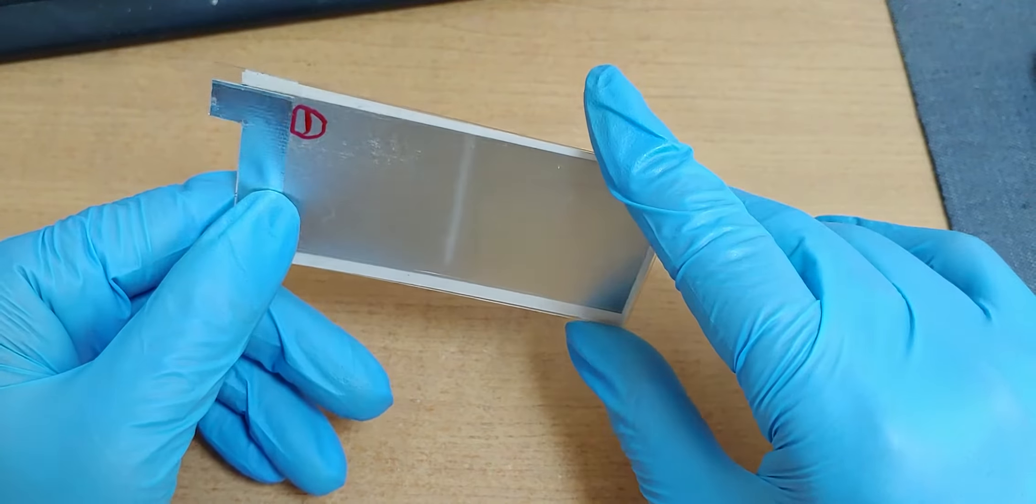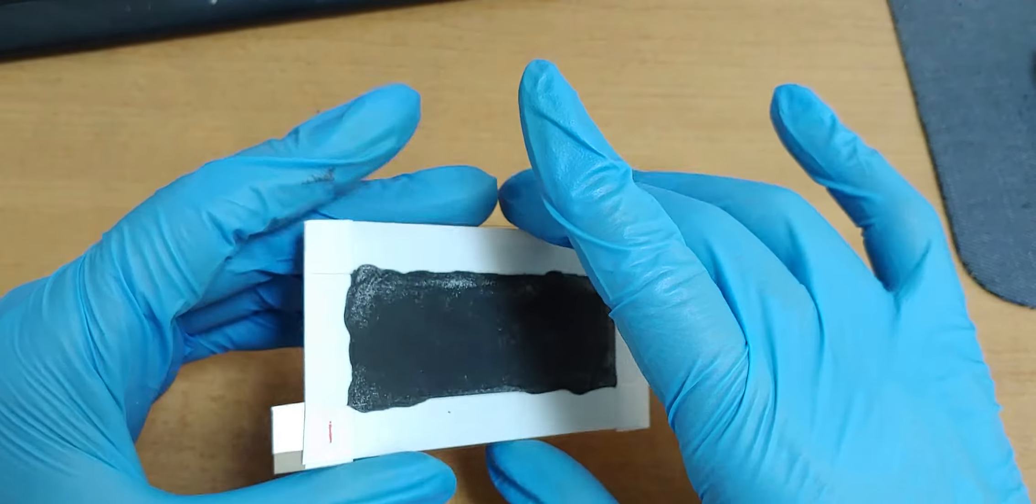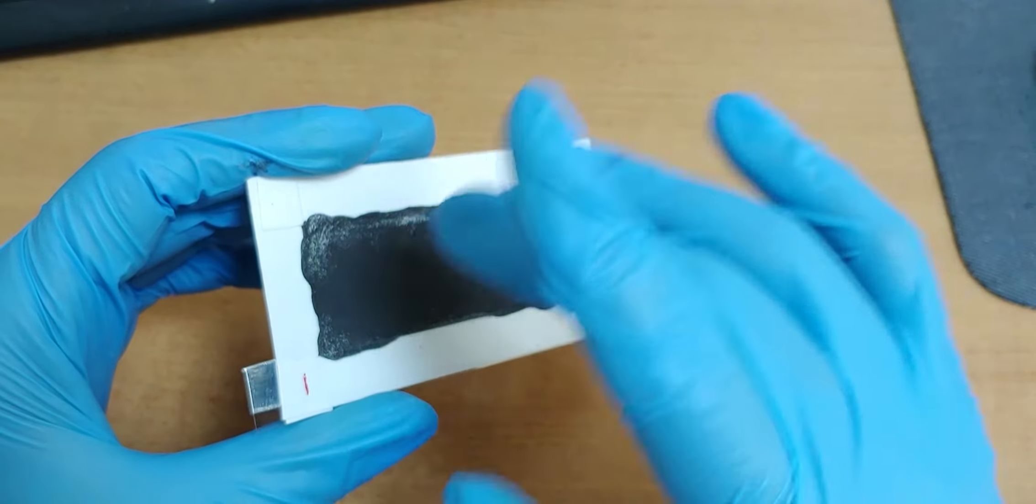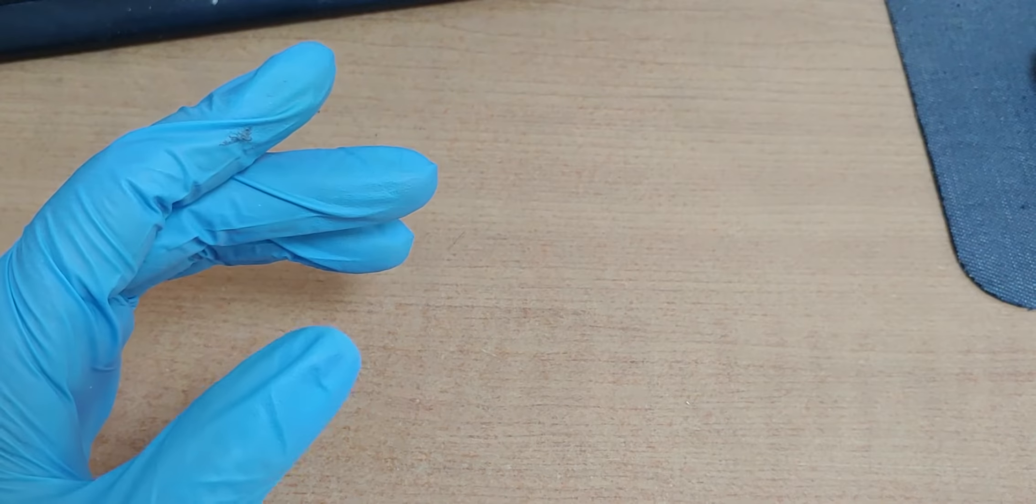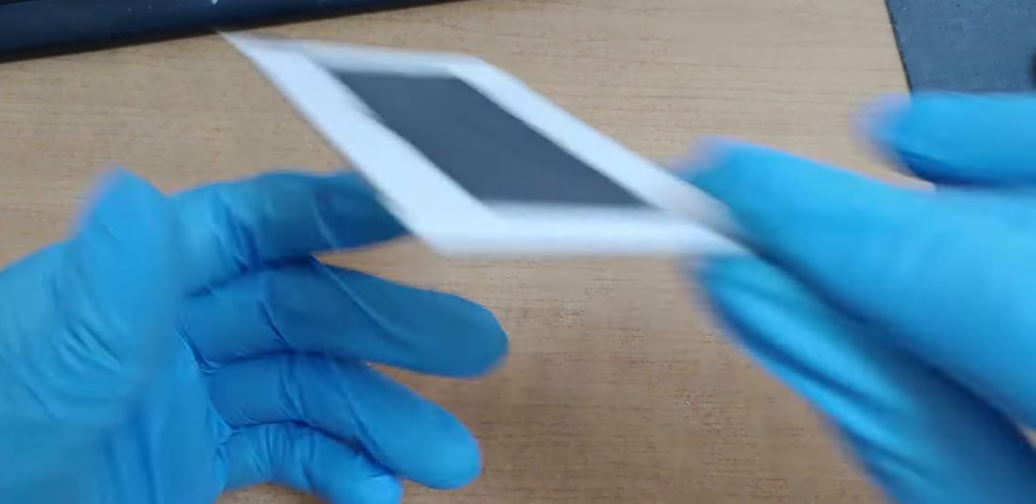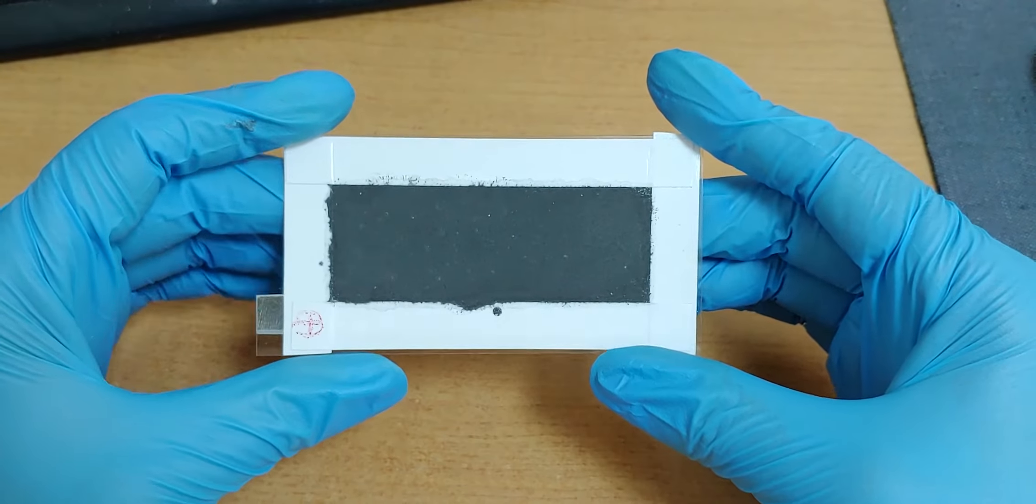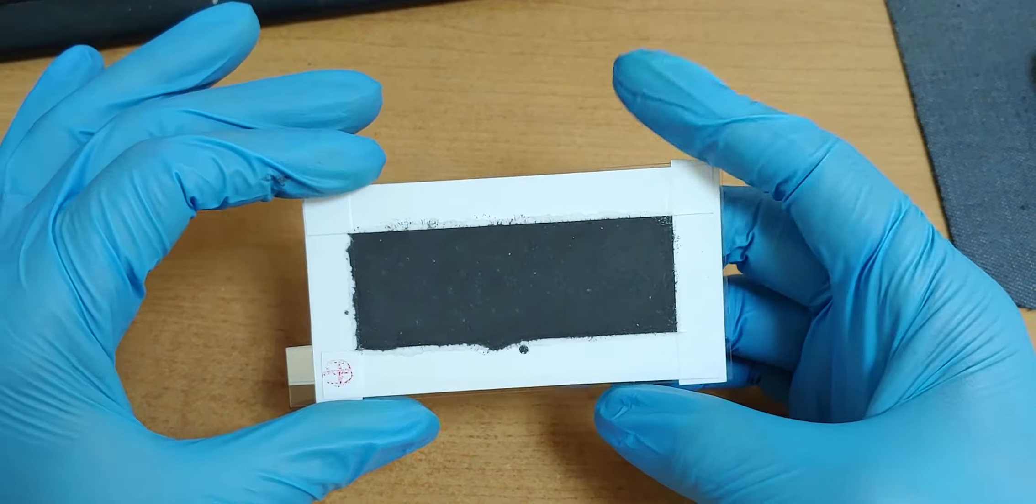This is a positive component made with iron oxide, detergent and water. And this is a negative component with an anode.